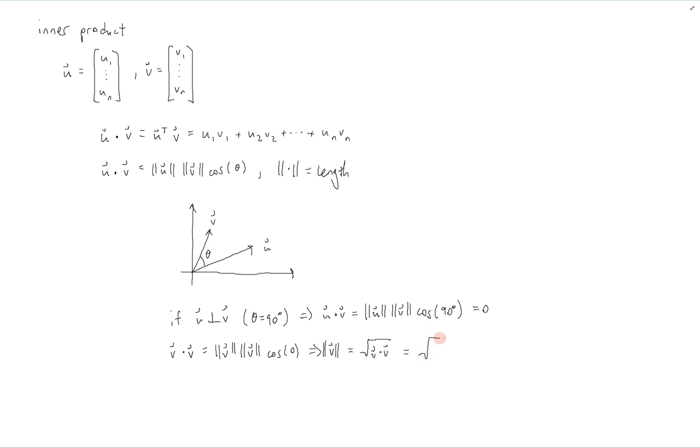And this, if we write it out using our first definition over here, the algebraic one, is v1 squared plus v2 squared, and so on, up until vn squared. So this defines the length of a vector.